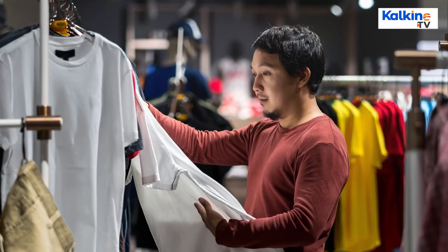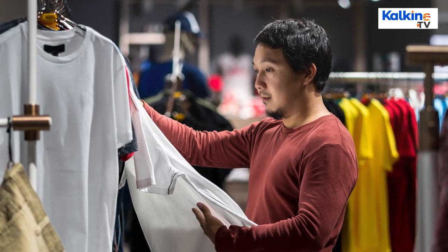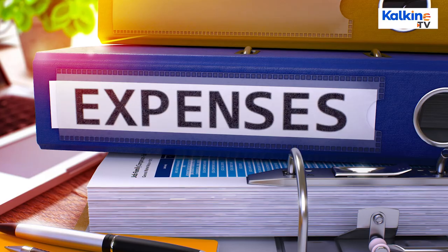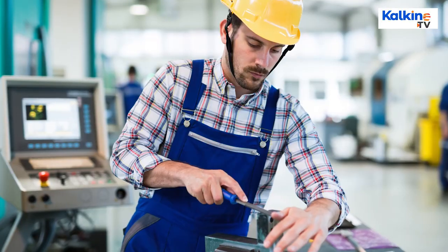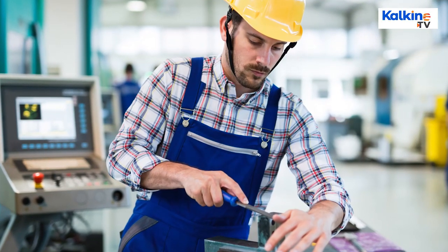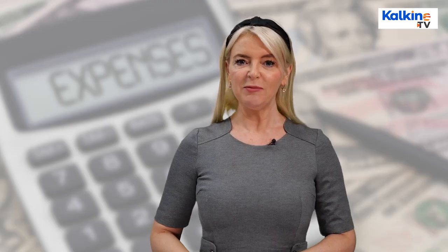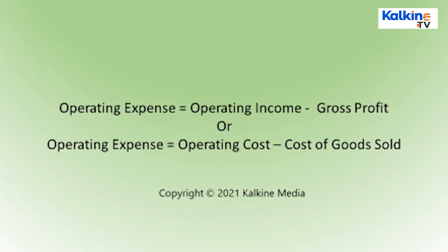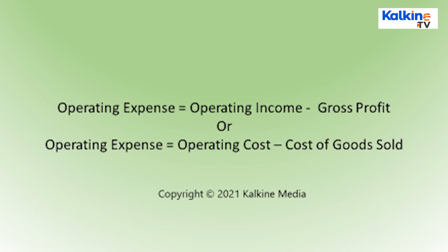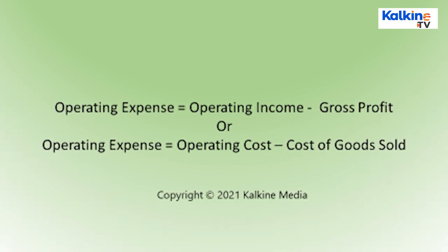An operational activity of the company is the crucial function associated with producing and providing goods and services to the market. The operating expense reflects the cost incurred in performing the operational activity and may vary for every industry. The formula to calculate operating expense is: operating income minus gross profit, or operating cost minus cost of goods sold.